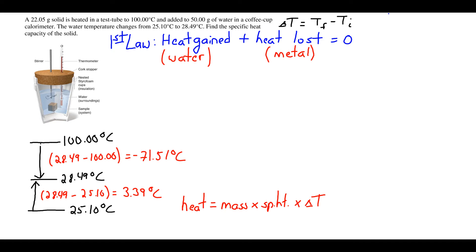We're going to apply the equation: heat equals mass times specific heat times Delta T, for both the water that gains in temperature and the metal that loses temperature.